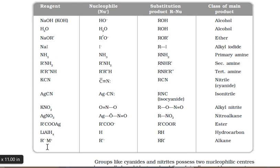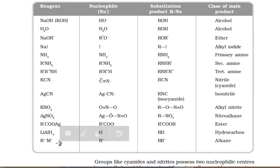An organometallic compound is one where a metal has a direct covalent linkage with carbon — represented as R'M. If an alkyl halide is allowed to react with an organometallic compound such as alkyl lithium (RLi) or a Grignard reagent (alkyl magnesium halide), the alkyl group of the organometallic compound replaces the halide ion, giving an R-R' alkane with a greater number of carbon atoms.